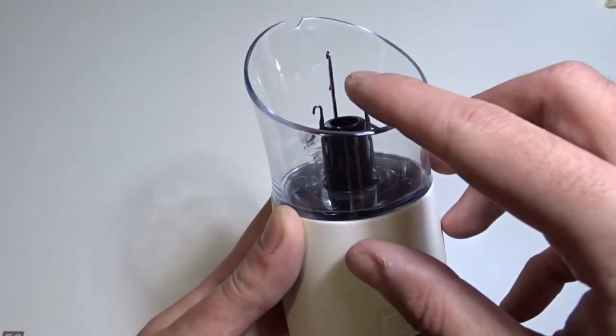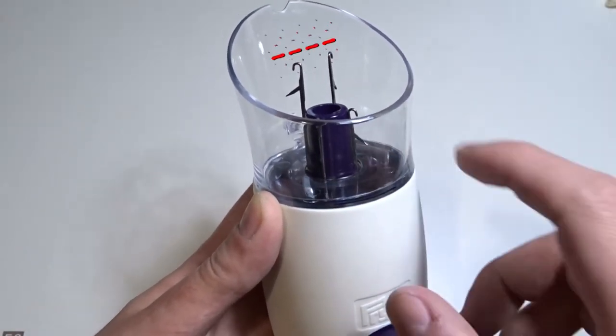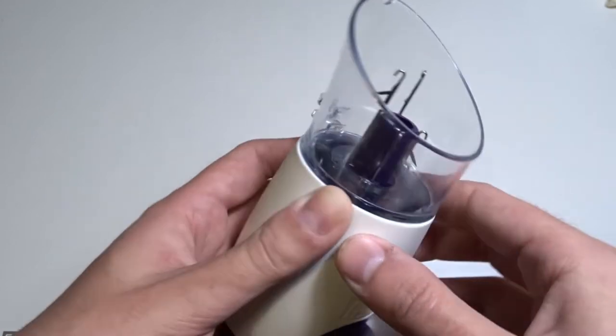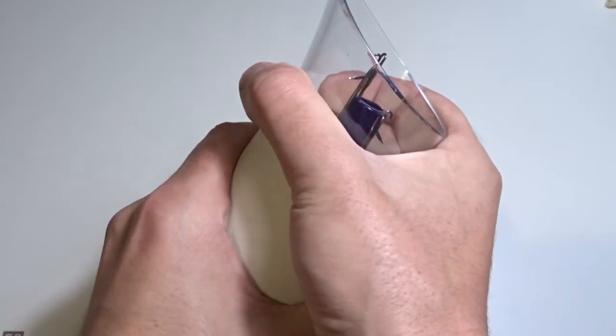To clean the mill or replace a broken needle, turn the handle until the two needles become the same height. Then very gently pull the top part.